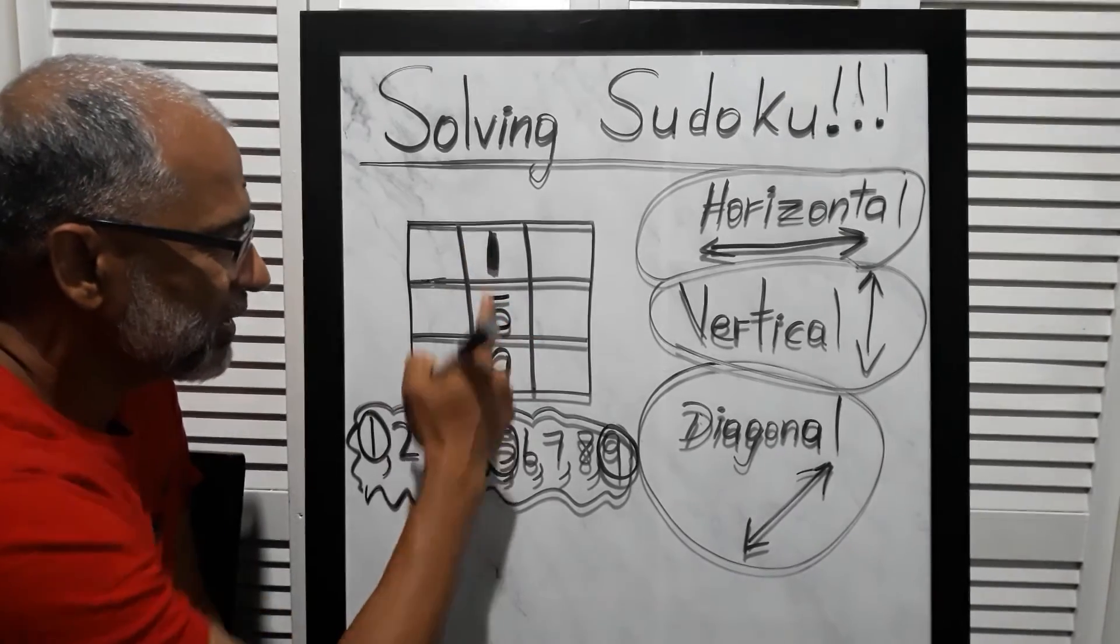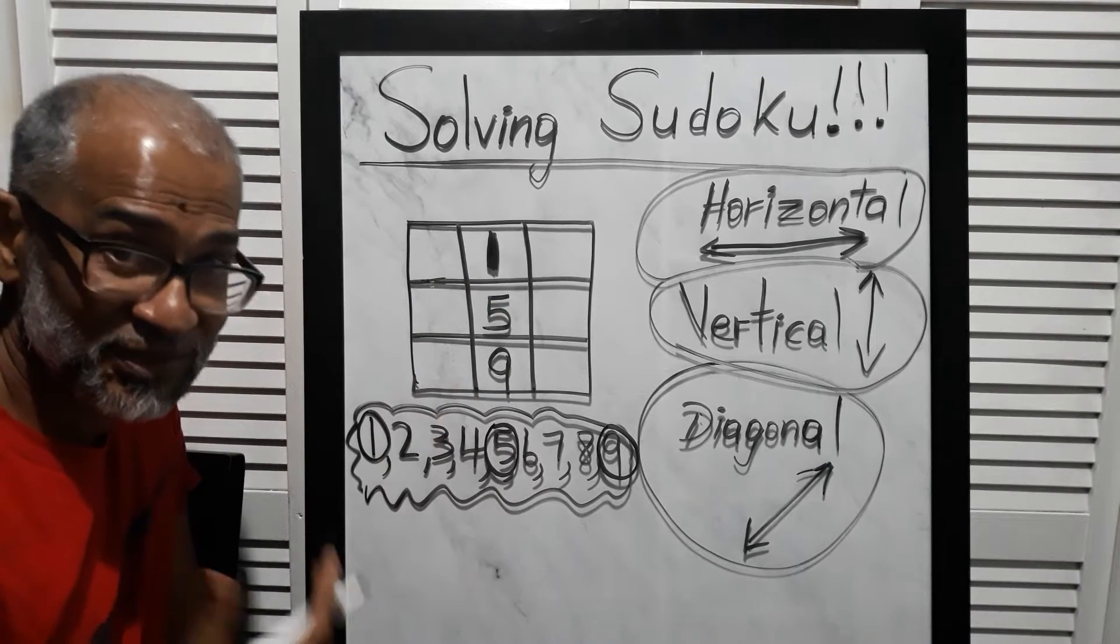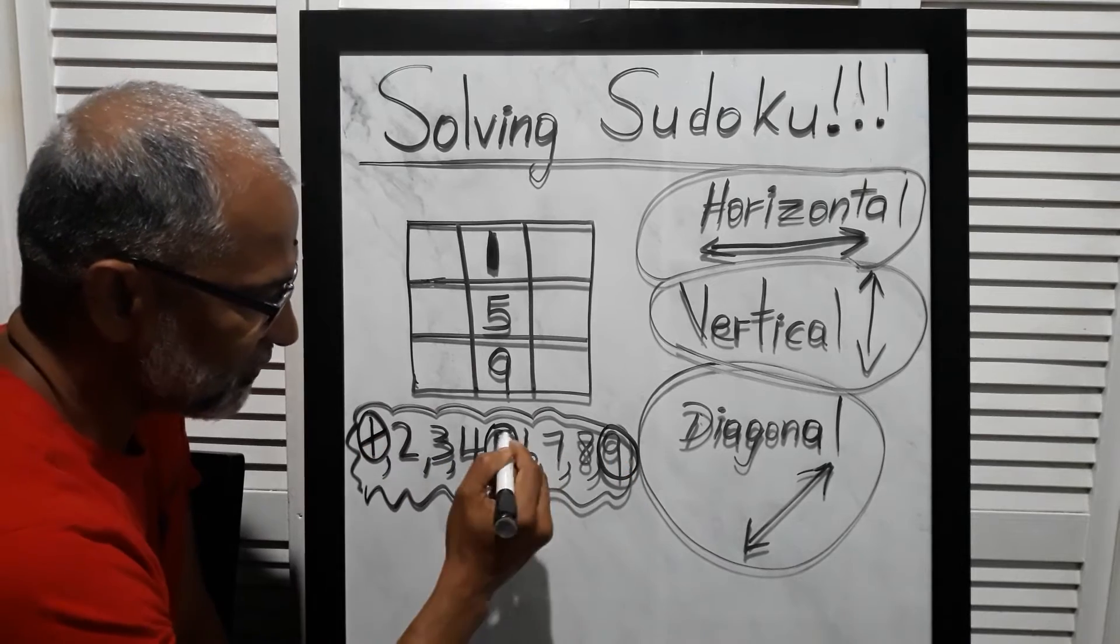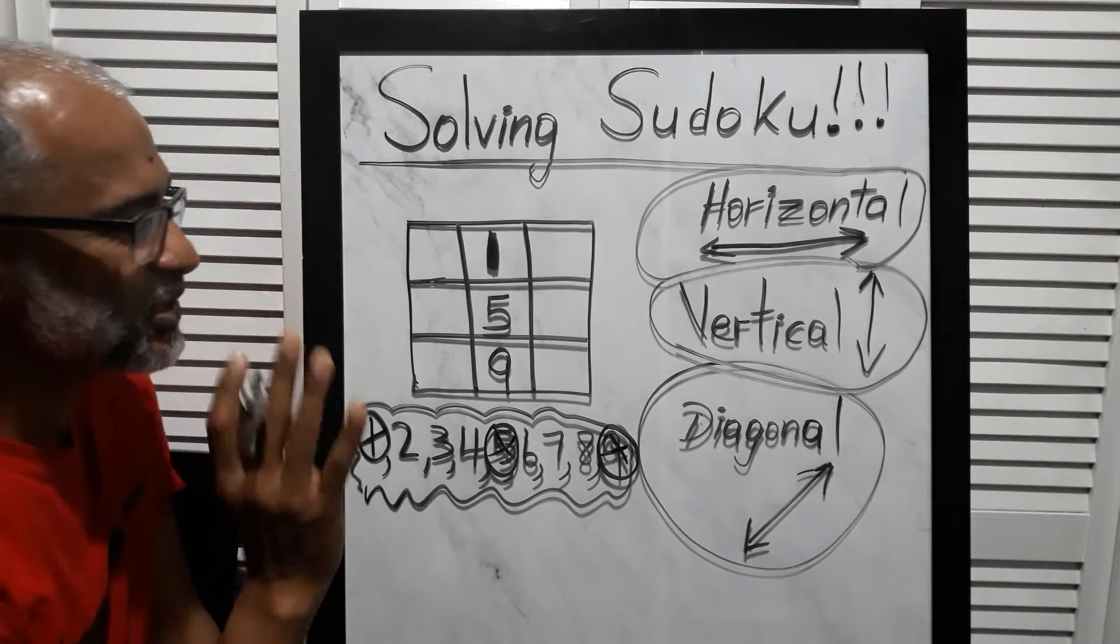So you see, one plus nine is ten, ten plus five is 15—got it? So we can't use these numbers again: one, five, and nine. We have to figure out the other numbers. There's a trick to this—we have to move diagonally. For example, from one, if you go diagonally from one box...